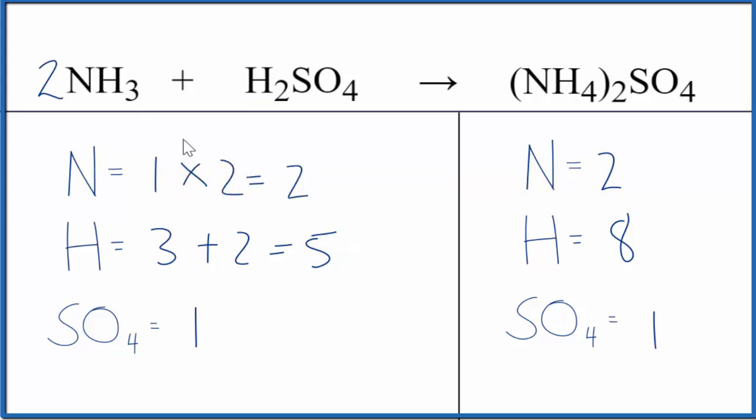Let's update our hydrogens now. Two times three is six plus the two here. That gives us eight. And we're done. This equation is balanced.